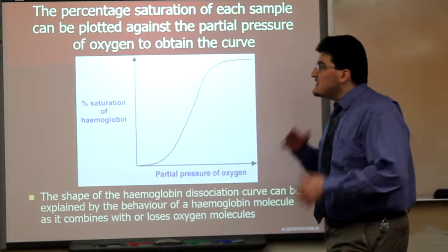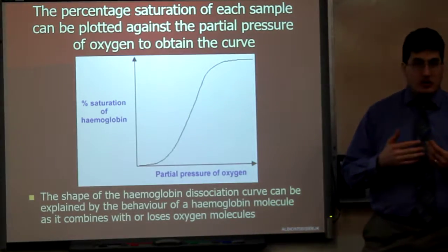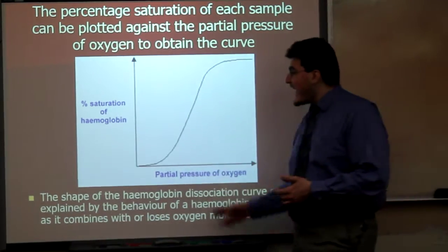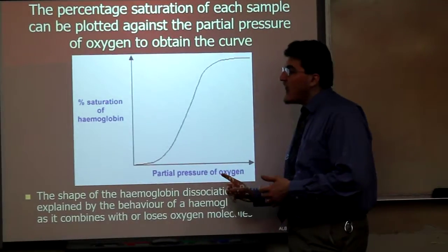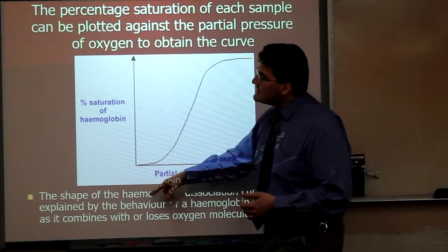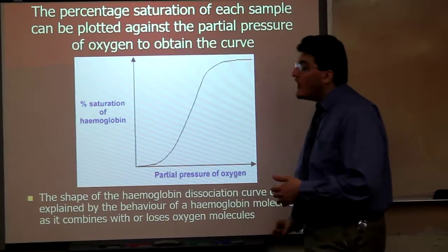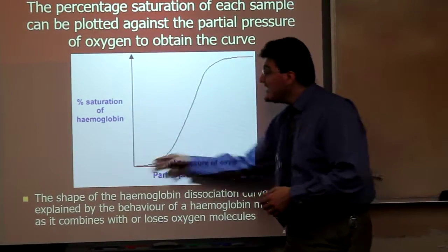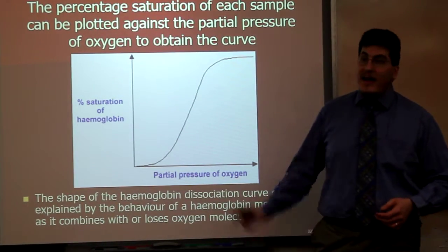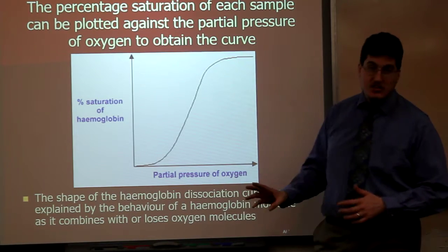This is your hemoglobin dissociation curve. Your x-axis is partial pressure of oxygen, and your y-axis is the percentage saturation of hemoglobin. This is a sigmoidal curve, an S-shaped curve.